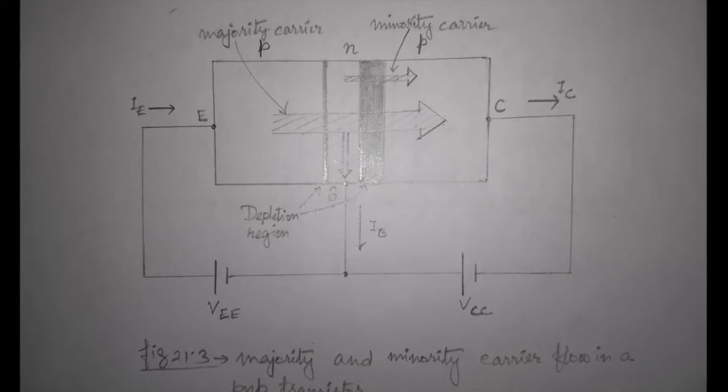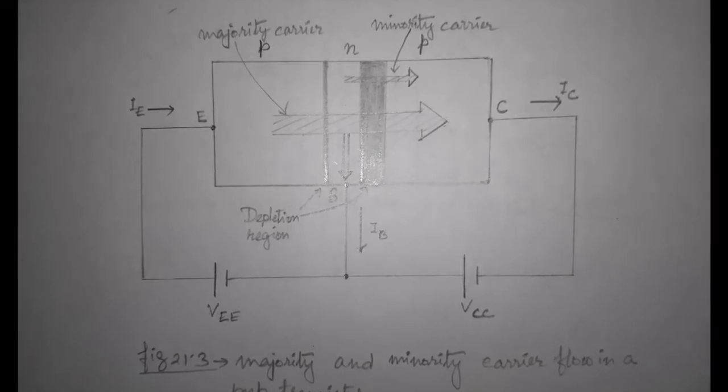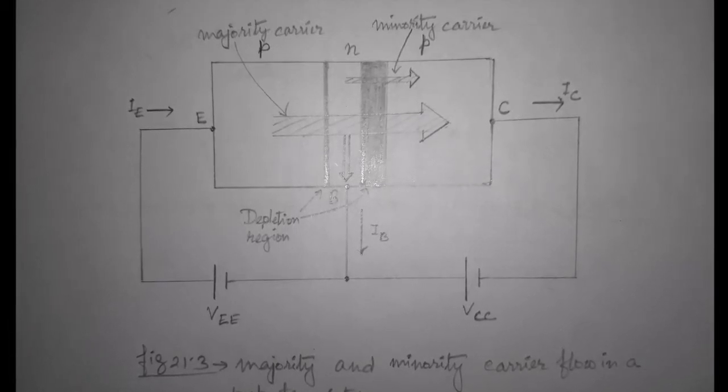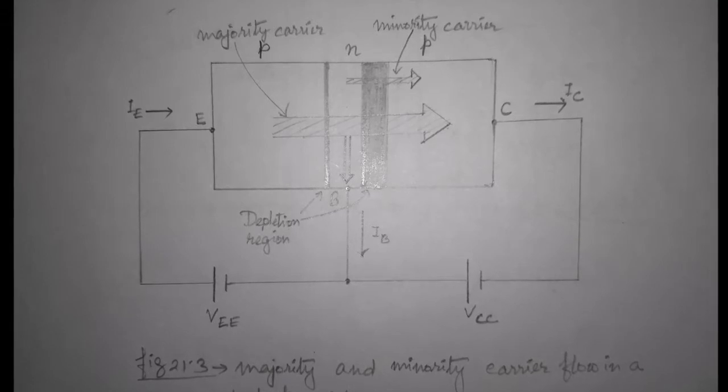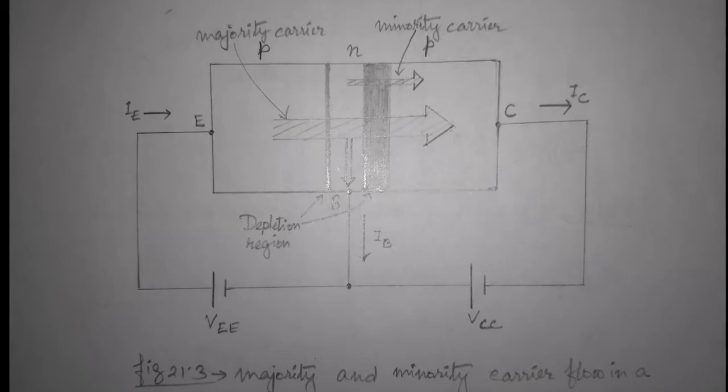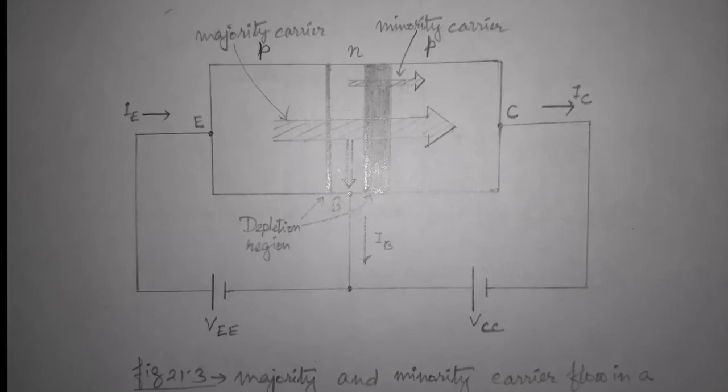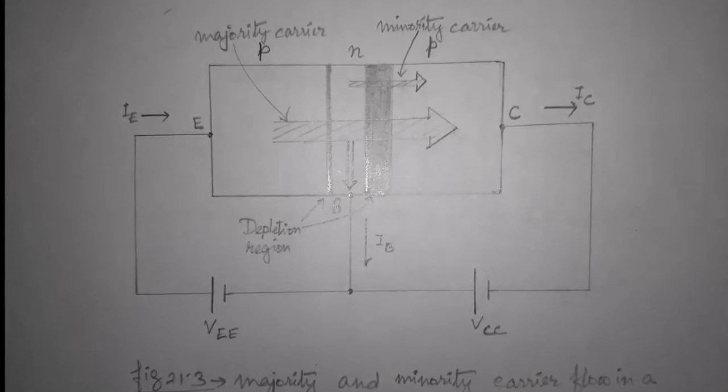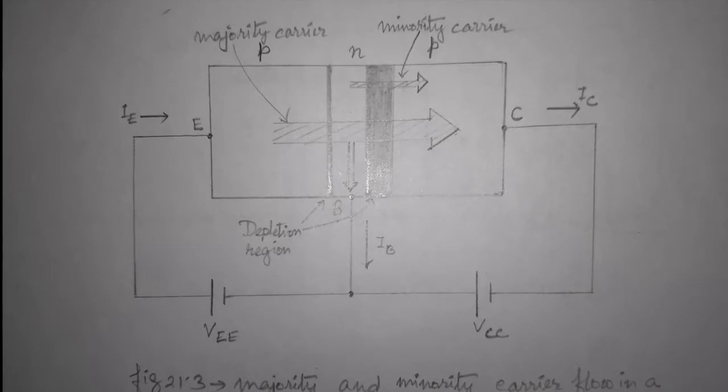Since the sandwiched N-type region is very thin and has a low conductivity, a very small number of carriers will take this path of high resistance to the base terminal. The magnitude of the base current is typically of the order of microamperes, while the collector and the emitter current is in milliamperes.